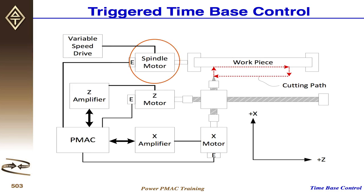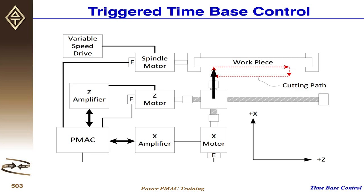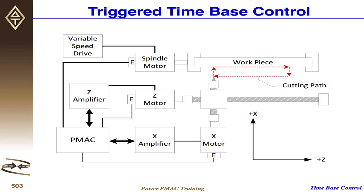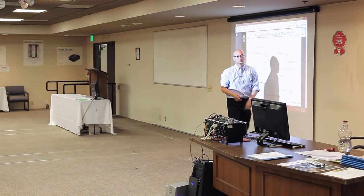In the threading hardware example, the spindle is not under PMAC control — we only get encoder feedback from it. We're controlling two motors: X and Z axes. The tool enters the workpiece, does the cutting in Z according to the spindle speed, then exits. The time base is only active during the cut itself — after the cut, you exit the time base, return to the initial position, wait for the index, then execute the next cut for the next thread.